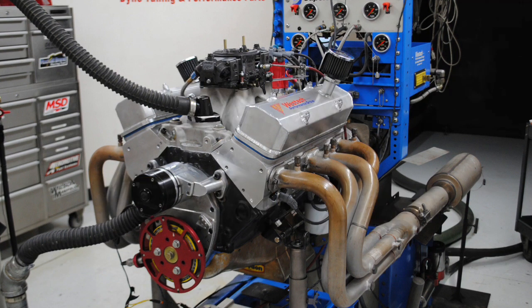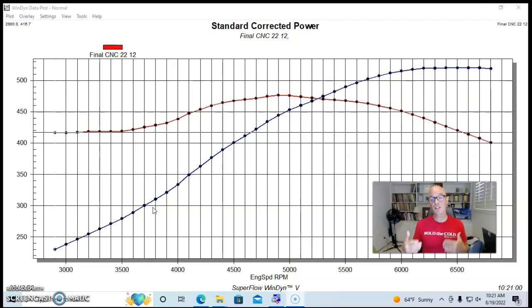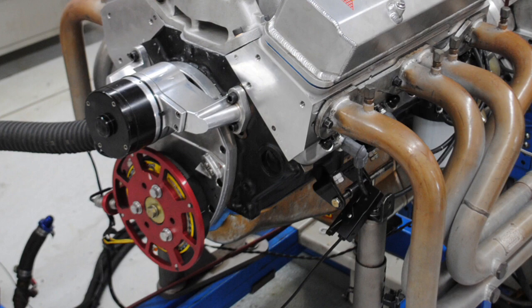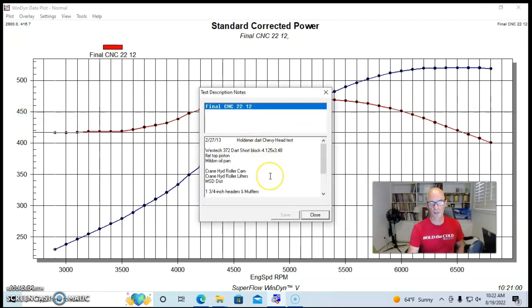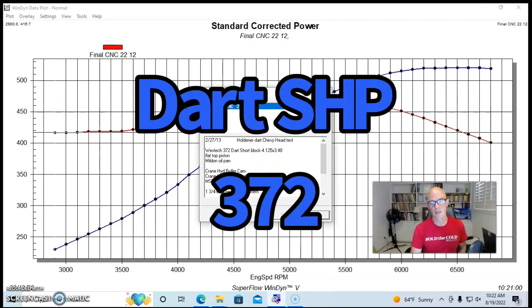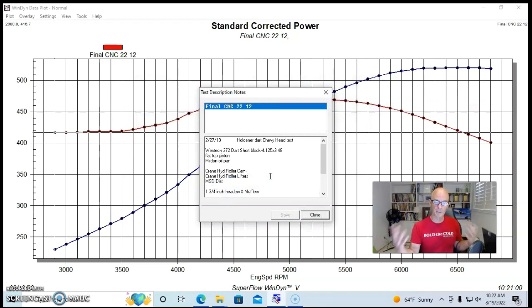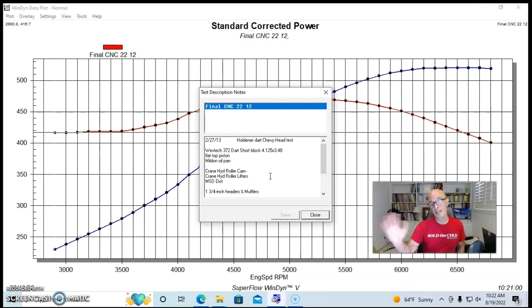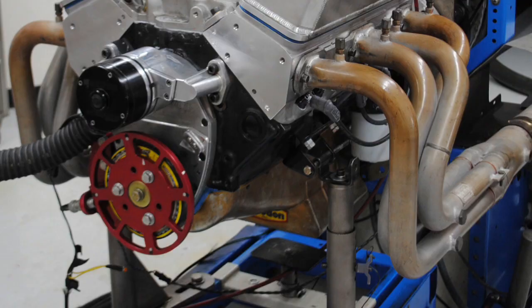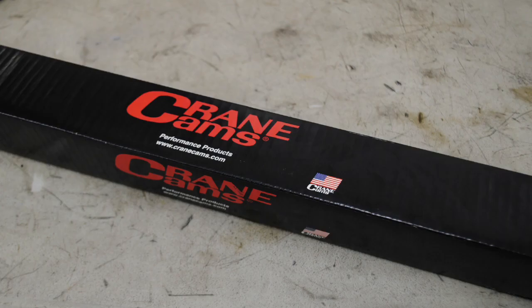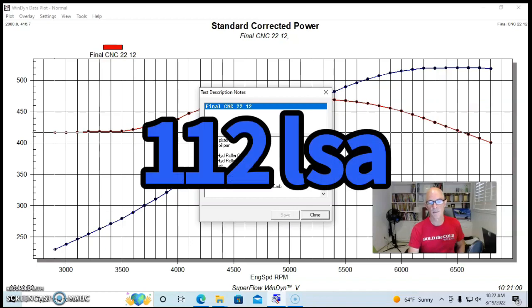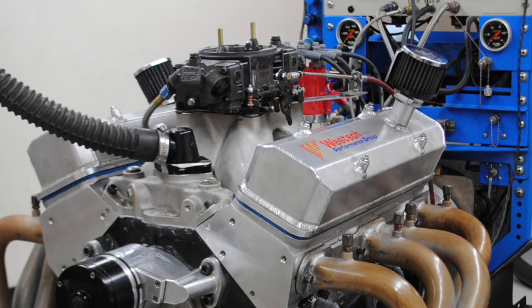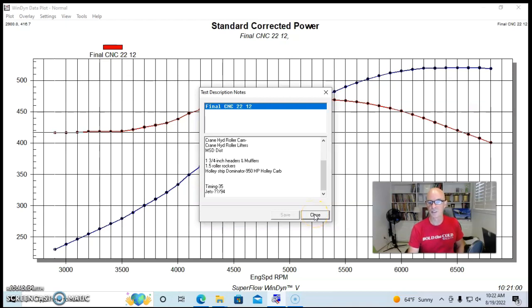So our Fast Five motor number two for small block Chevy is actually still a naturally aspirated motor, but a stroker version. This was a 372 inch stroker motor. This is the Westec. It's a Dart SHP short block. So it was a 4.125 bore, so the big bore block, because it was a Dart block, and the 3.48 stroke. So the standard 350 stroke, but a big bore version. It had a flat top piston, forged internals. It had a good Milodon oil pan. It had a crane hydraulic roller. Hydraulic roller lifters, inch and three-quarter headers, 1.5 ratio roller rockers. And this one was run with a Holley strip dominator intake and a 950 Holley.